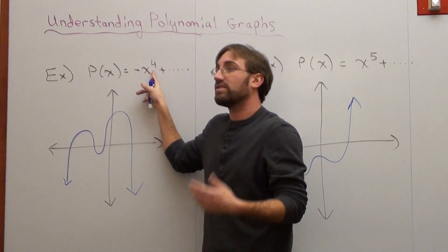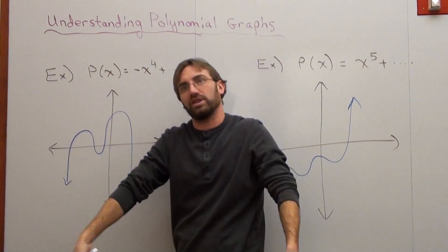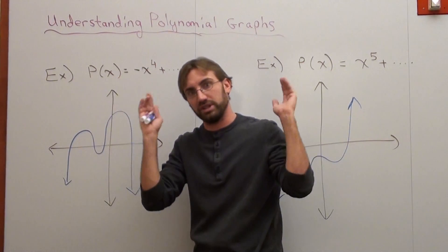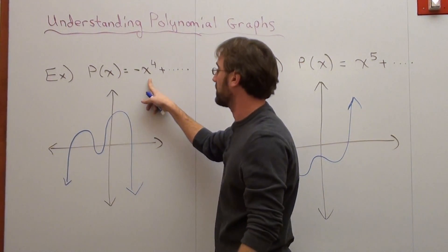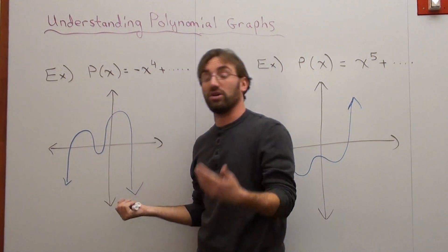Now, if it's an even function or an even polynomial, both arrows will point in the same direction. They'll either point up or they'll point down. And that's what this one does. They both point down, and the right arrow happens to point down too.